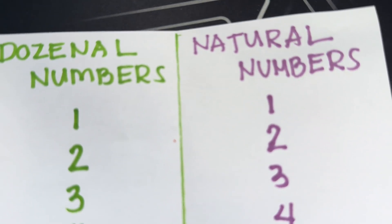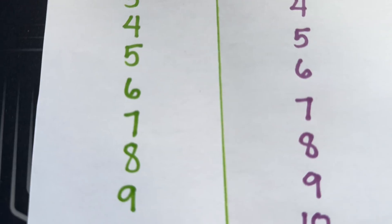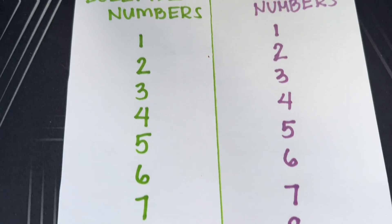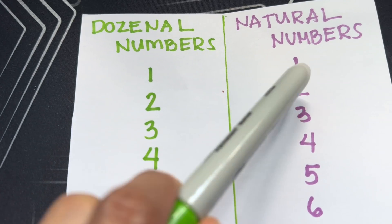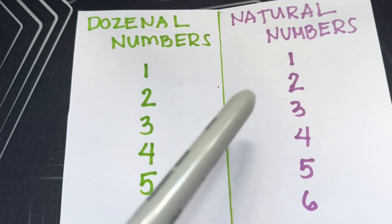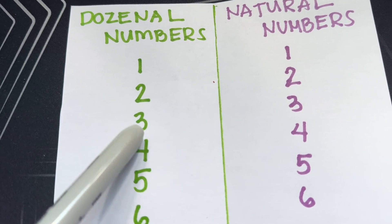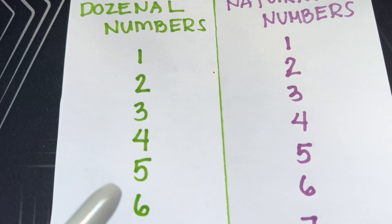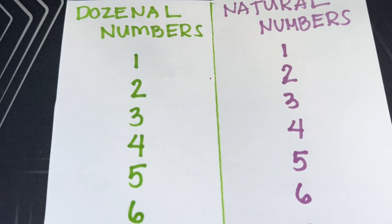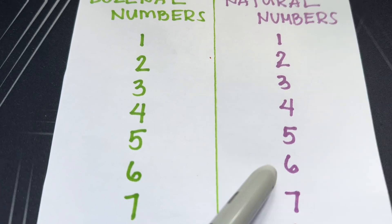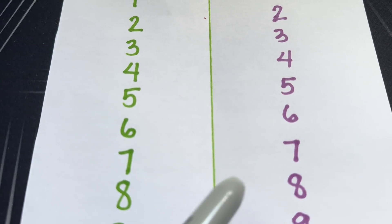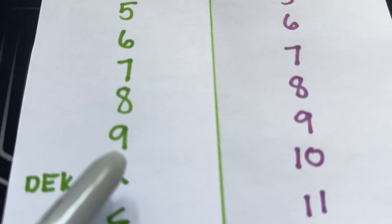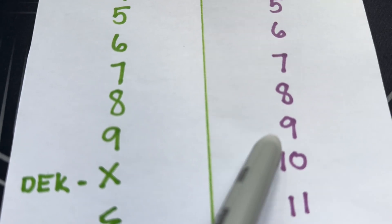Dozenal numbers versus natural numbers. Let's try and compare them. 1 and 1, 2 and 2, 3 and 3, 4 and 4, 5 and 5, 6 and 6, 7 and 7, 8 and 8, 9 and 9.